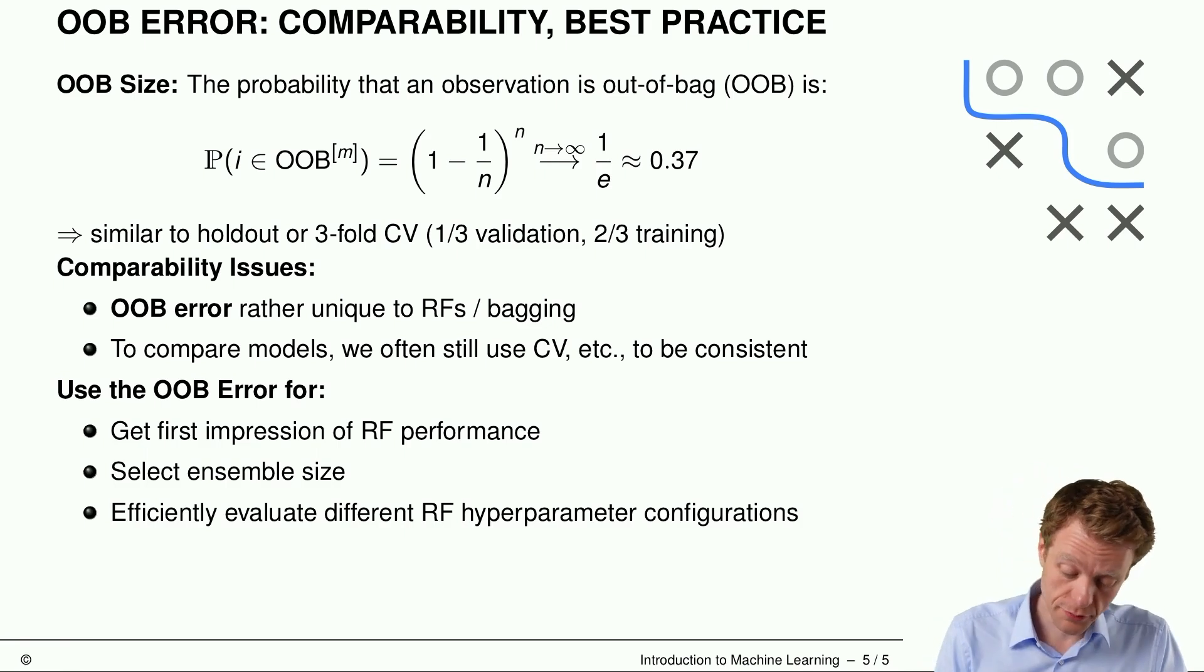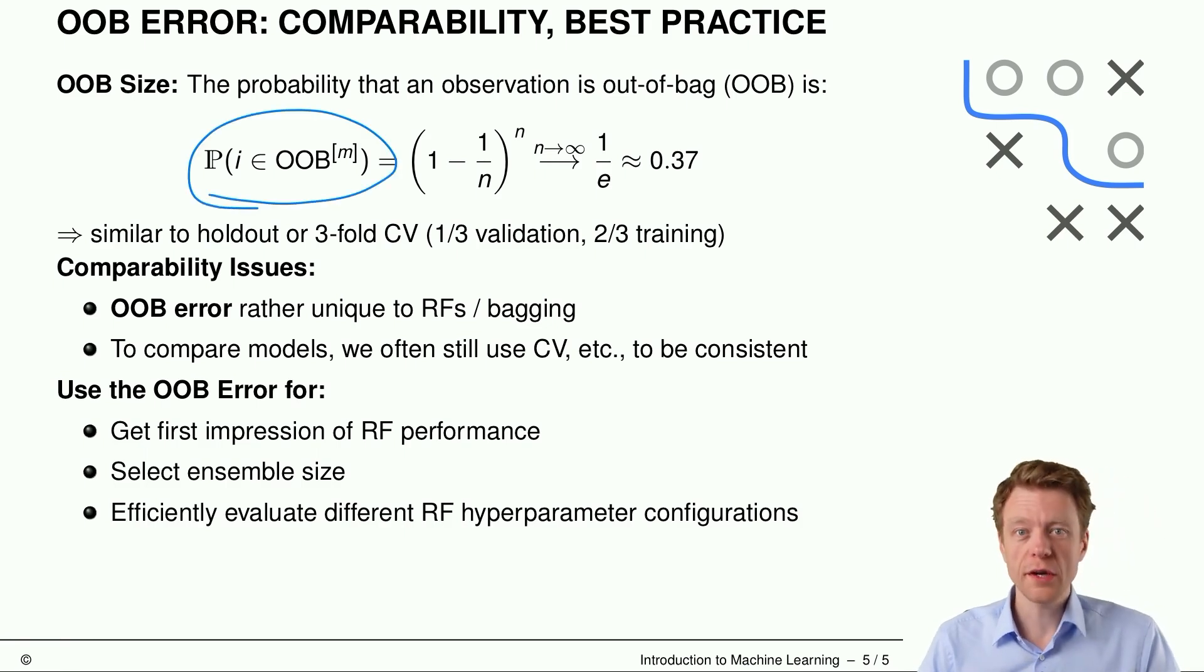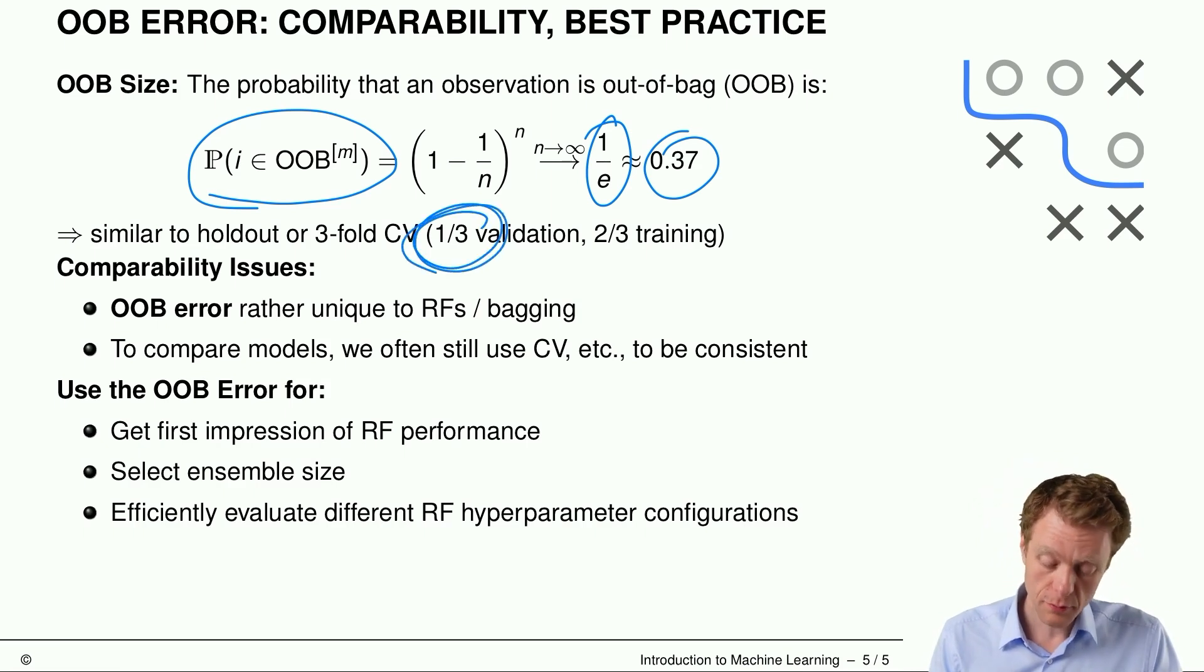So one question could be how large this out-of-bag set usually is, and it turns out that the probability that an observation is out-of-bag for a given bootstrap sample converges to one divided by e, so more or less one third. So it's similar to holdout with two to one split, or two to three for cross-validation. Of course it's not the same thing, but it feels a little bit like this, because it's also more or less one third for validation data.